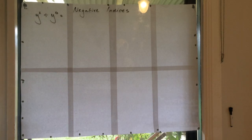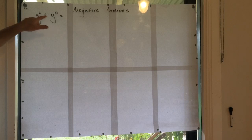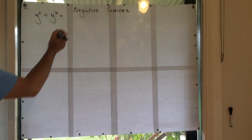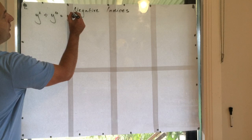Okay, so what we're going to do is talk a little bit about negative indices. If I go over this, if I say what's y to the 2 divided by y to the 4, we instinctively say it's y to the negative 2.